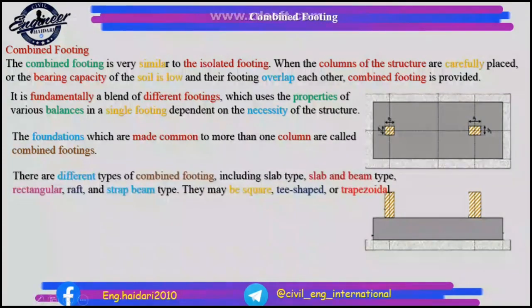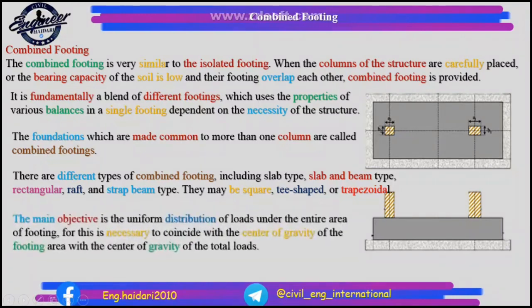There are different types of combined footing including slab type, slab and beam type, rectangular raft, and strap beam type. They may be square, T-shaped, or trapezoidal. The main objective is the uniform distribution of loads under the entire area of footing, which requires the center of gravity of the footing area to coincide with the center of gravity of the total loads.